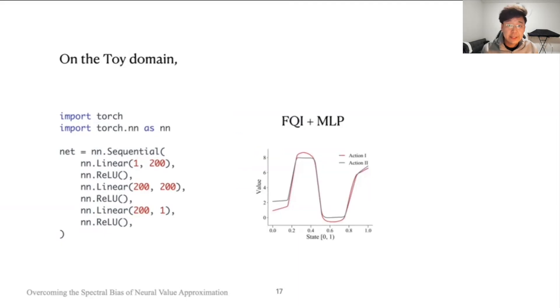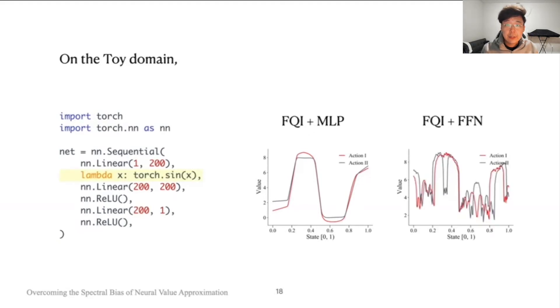And this allows us to go from underfitting, as shown here using a multilayer perceptron, to a high-quality value approximation that recovers all of the fine details of the optimal Q function.